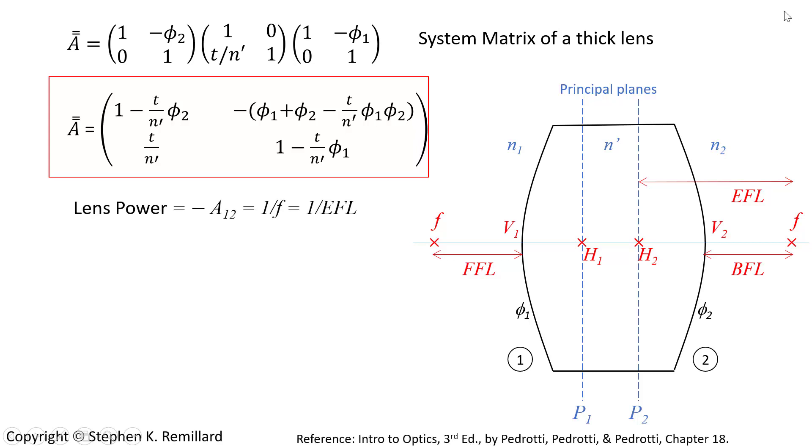The refracting power of the lens is minus the entry a one, two. What it actually is, is one divided by the effective focal length. Because with a thick lens, you can't really talk about the focal length. You can talk about the focal length relative to a principal plane. Call it the effective focal length.